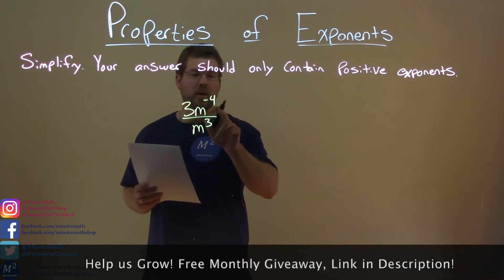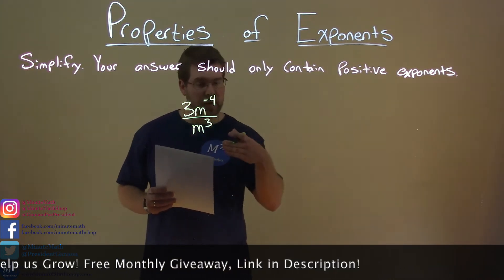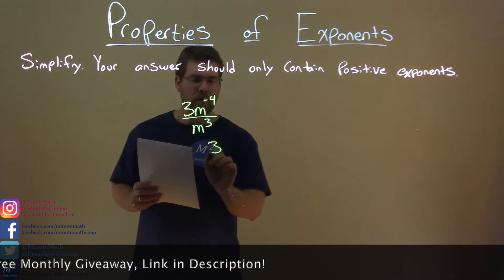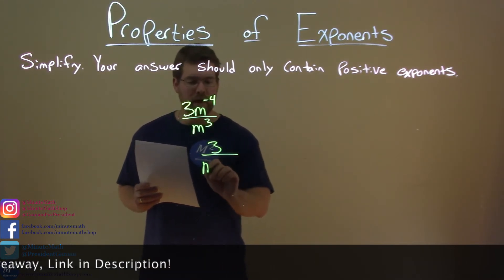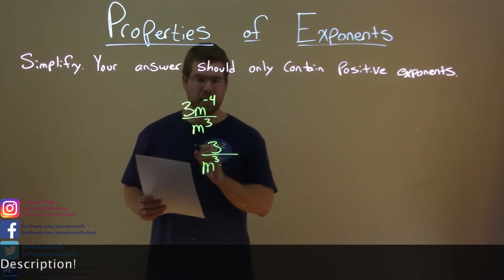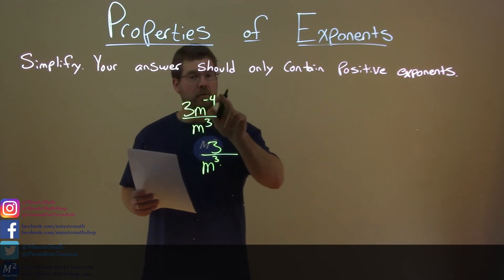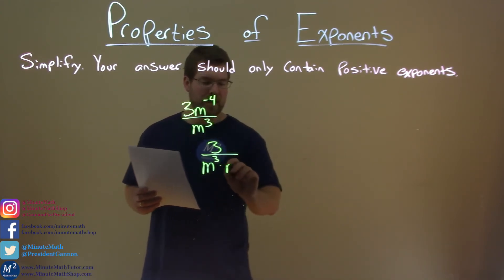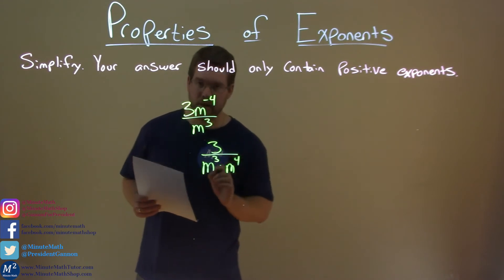First thing I like to do, let's bring that m to the negative fourth to the denominator. So in doing so, 3 is left in the numerator, we have m to the third power already in the denominator, but m to the negative fourth power in the numerator is the same thing as m to the positive fourth power in the denominator.